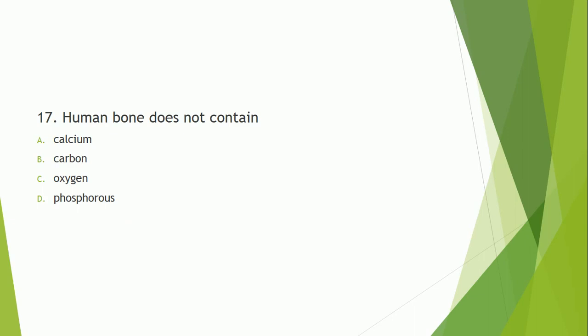Question number 17: Human bone does not contain which element? The correct answer is option C — oxygen is not present in human bone. Human bone contains calcium, carbon, and phosphorus.